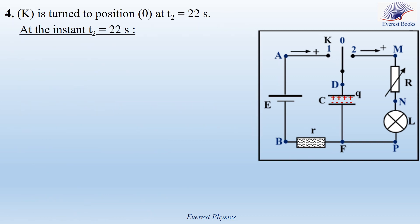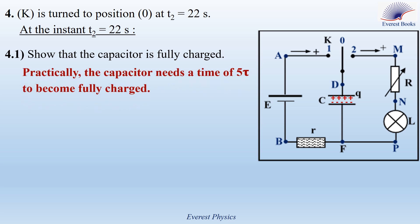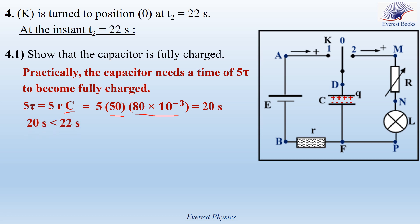Part 4: The switch K is turned to position 0 at time equal to 22 seconds. At instant T2 equal to 22 seconds, show that the capacitor is fully charged. During charging, practically the capacitor needs a time of 5 tau to become fully charged. 5 tau equals 5 times r times C — substituting r equal to 50 ohms and C equal to 80 times 10 to the power minus 3 farads — gives 5 tau equal to 20 seconds. Since 20 is less than 22, the capacitor is fully charged at this instant.